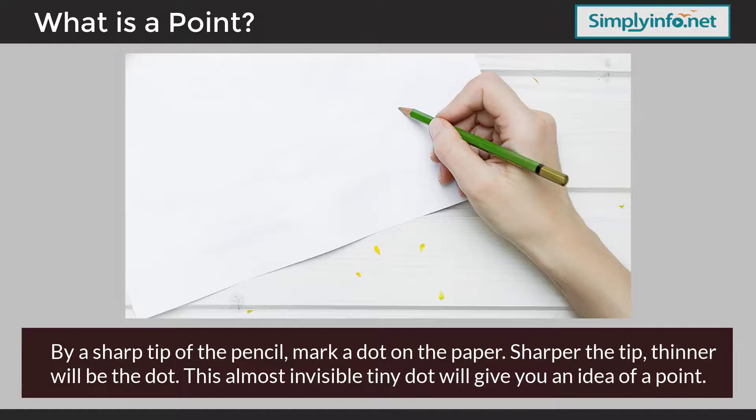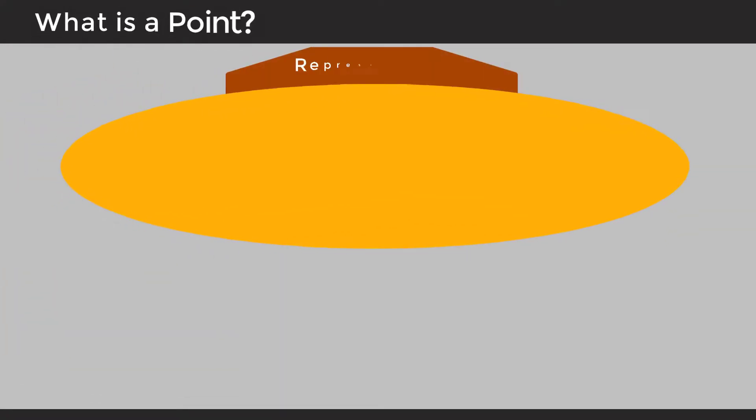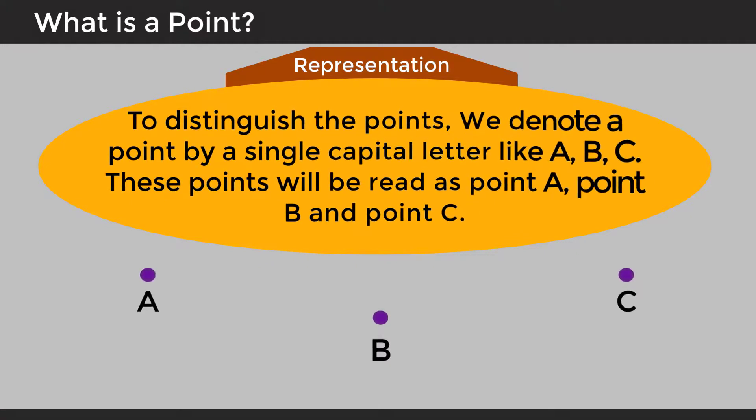By a sharp tip of the pencil, mark a dot on the paper. Sharper the tip, thinner will be the dot. This almost invisibly tiny dot will give you an idea of a point.